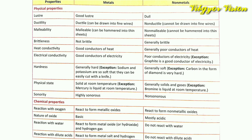Next is hardness: metals are generally hard, while non-metals are generally soft. Regarding physical state, metals are solid at room temperature — except mercury, which is the only metal that is in liquid state at room temperature. Non-metals are generally solids or gases, except bromine, which is the only non-metal in liquid state at room temperature.